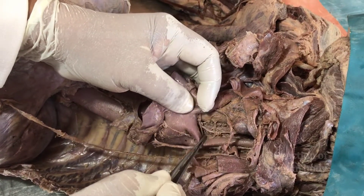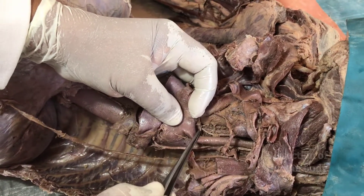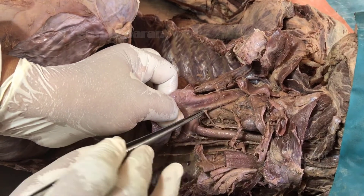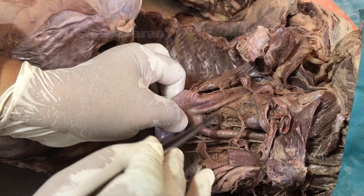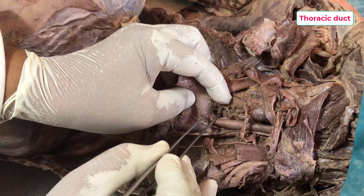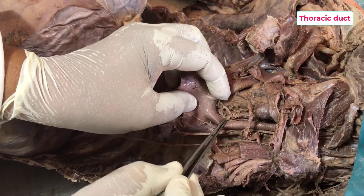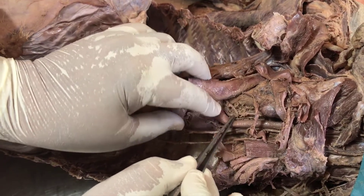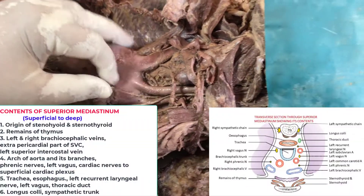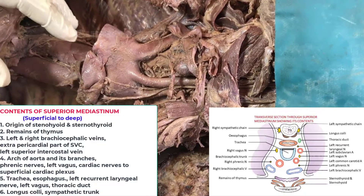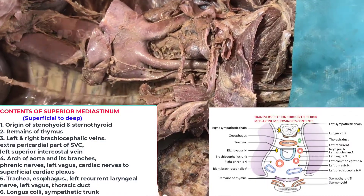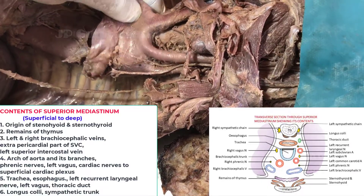Apart from these structures, you may find another structure — another lymphatic channel which is the thoracic duct. Here is the thoracic duct. This is the thoracic duct which is on the left side of the left margin of the esophagus, on its way to its termination at the junction of the left brachiocephalic vein and the internal jugular vein on the left side.